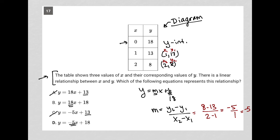So there's my slope. So I know my slope has to be negative 5. So choice D must be correct.